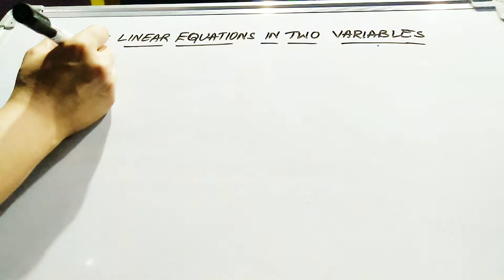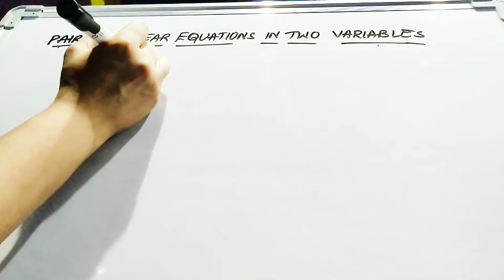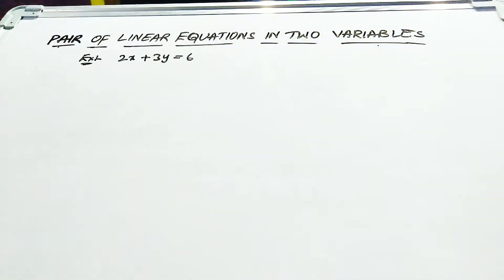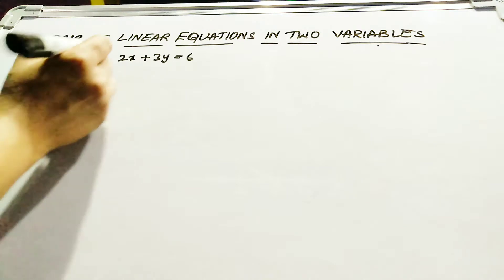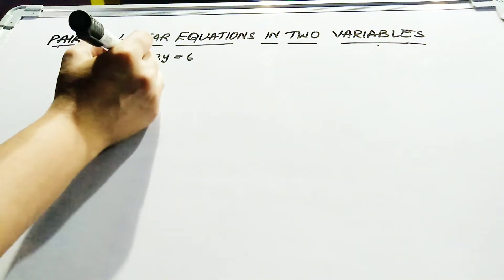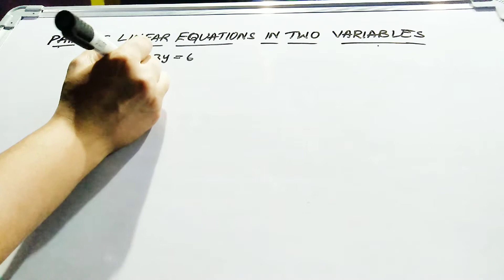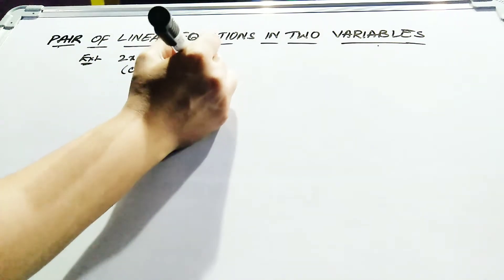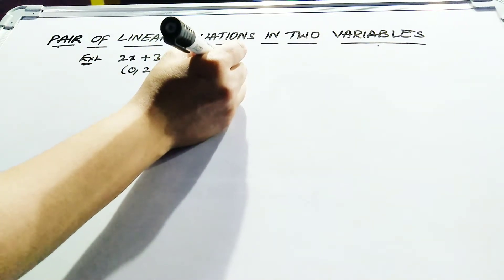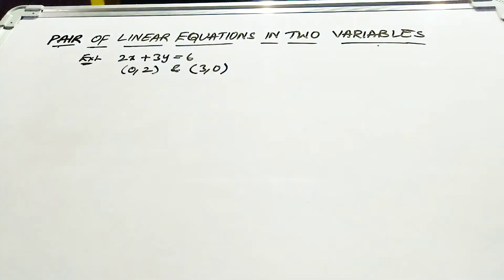In our previous video, we took one example: 2x plus 3y is equal to 6. Just go to the previous video where you will find the solutions. What solution did you get from that? When x is 0, y is 2, and when x is 3, y is 0. This is the solution you get from the equation.